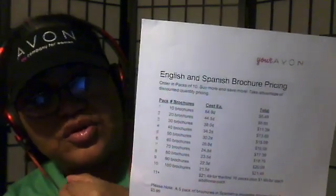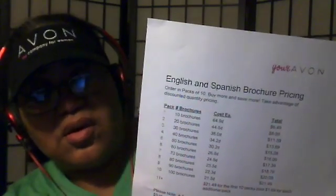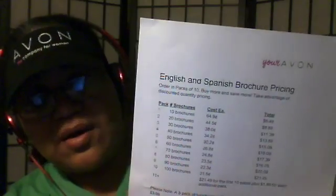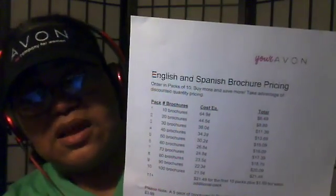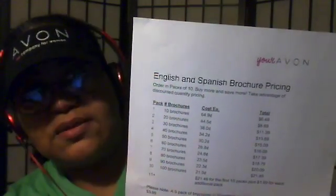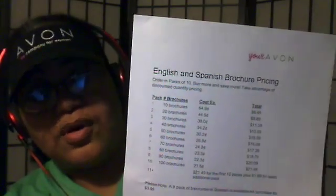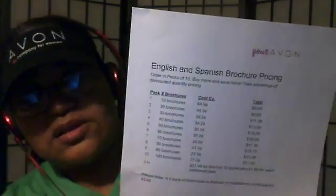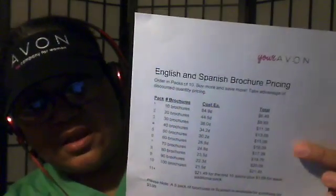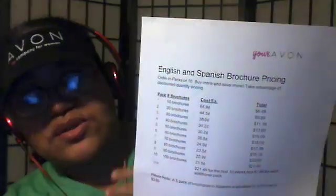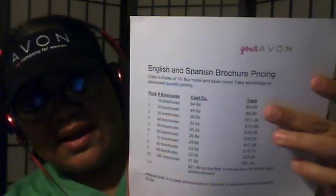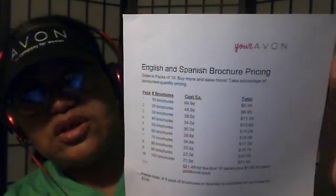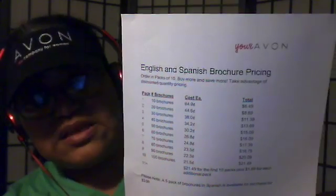When you make your order for your customers it's gonna tell you in there how many books you want. Same thing with megalogs, same thing with your regular brochures — it's gonna have more than a few books in there. Check the price. I even printed it out, so this is the English and Spanish brochure pricing.